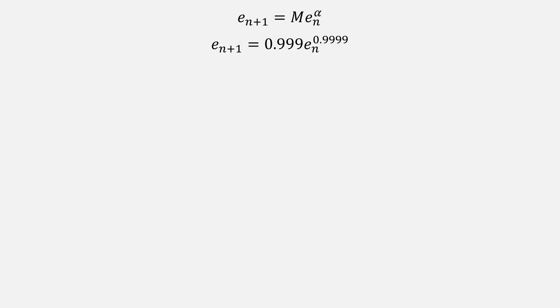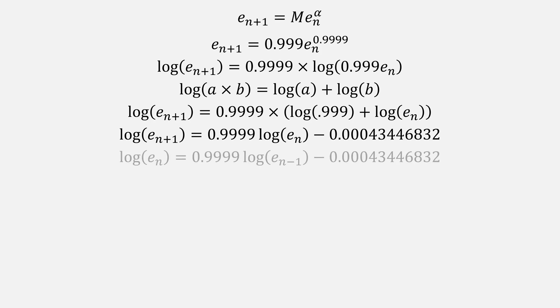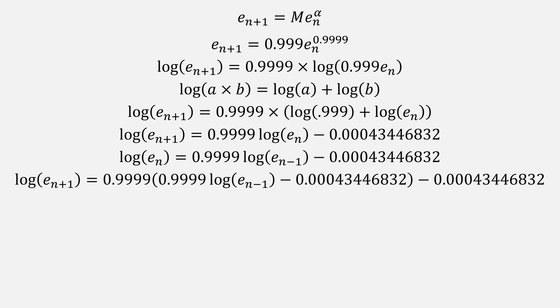Using what we know for alpha and m, we plug them into our error equation. Then, take the log of both sides to extract that exponent. Afterwards, use properties of logs to split up that term on the right side, which we can simplify. Then, taking this iteration function, we can step it back one iteration. Then, using a substitution, we can come up with this form.